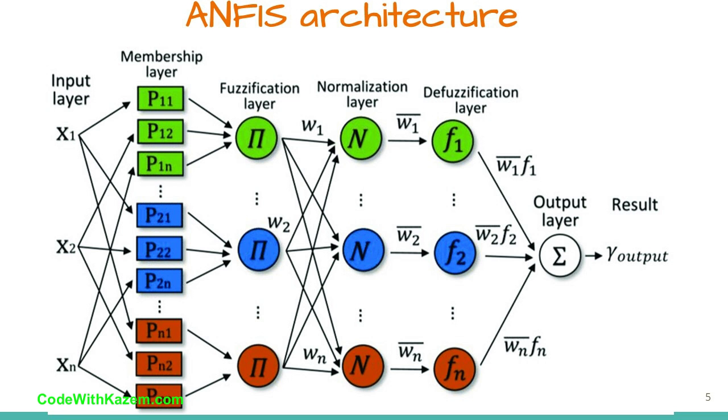ANFIS Architecture. It is possible to identify two parts in the network structure, namely premise and consequence parts. In more detail, the architecture is composed of five layers. The first layer takes the input values and determines the values of membership functions. It is commonly called fuzzification layer. The membership degrees of each function are computed by using the premise parameter set.